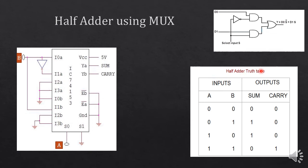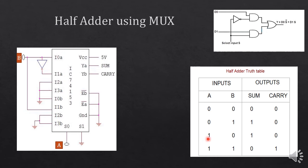This is the truth table of the half adder with A and B as inputs and sum and carry as outputs. We are using B as the data pin and A as the select pin. When the select input is 0 the output equals B, so B is connected directly to I0A. When the select input is 1 the output is the complement of B, so a NOT gate is applied and connected to I1A. Pins I2A and I3A are grounded as they are not required.